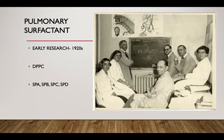The proteins associated with composing surfactant are called specific surfactant proteins: SP-A, SP-B, SP-C, and SP-D. Although they are all in the category of specific surfactant proteins, they are slightly different. For example, SP-A and SP-D are glycoproteins and are hydrophilic, meaning they can dissolve in water and attract water molecules. SP-C and SP-B, on the other hand, are hydrophobic, meaning they repel water molecules and cannot dissolve in water.